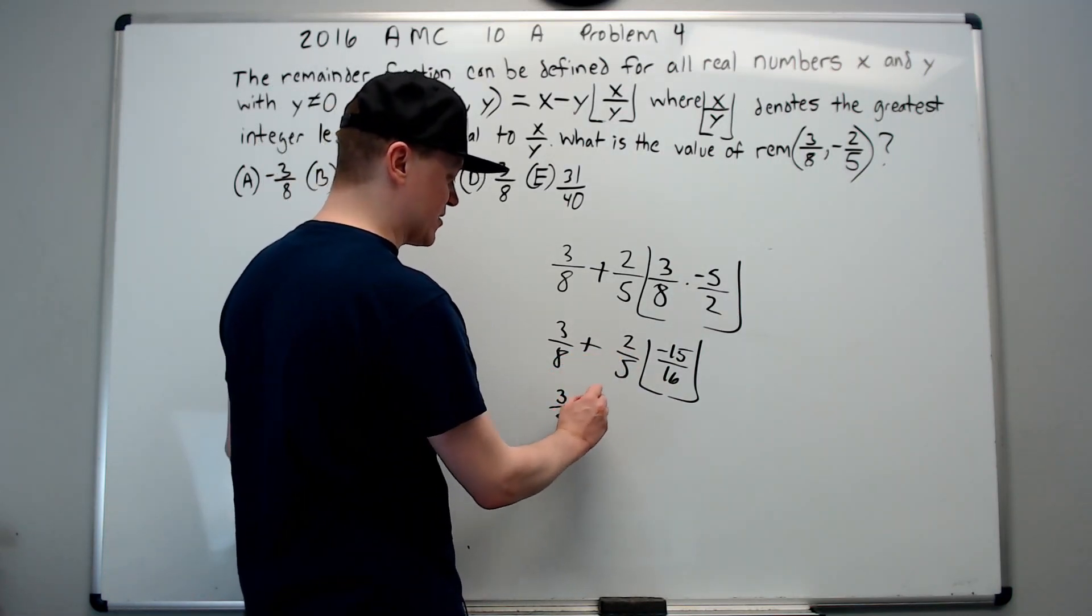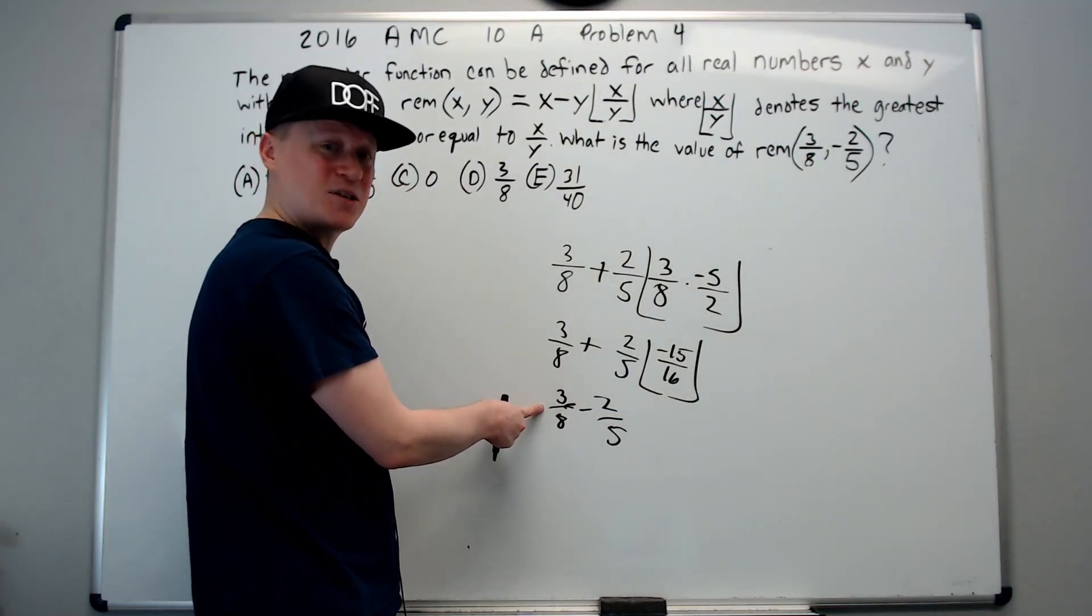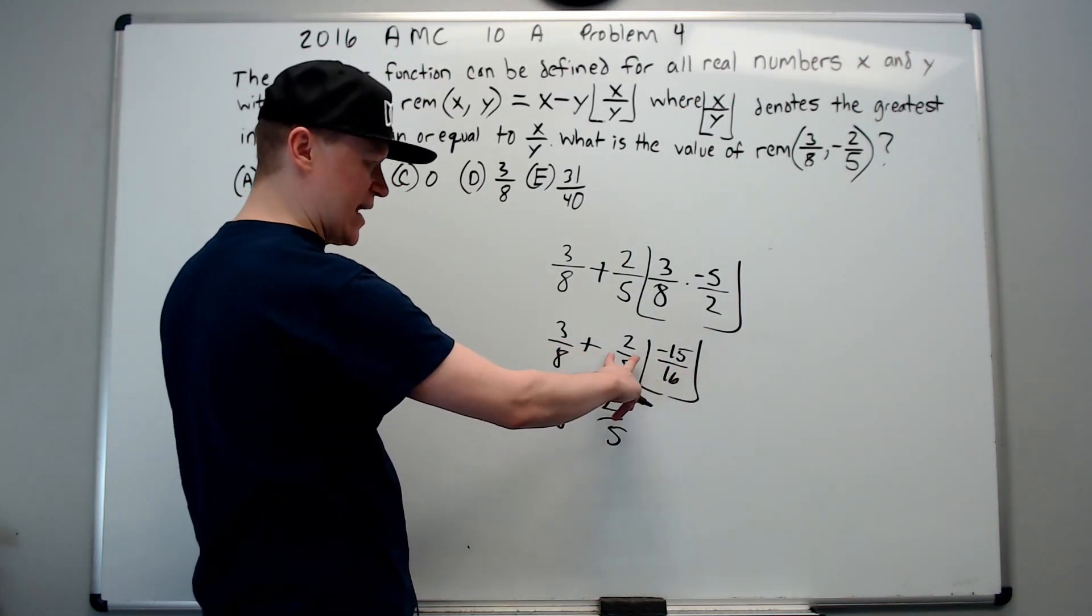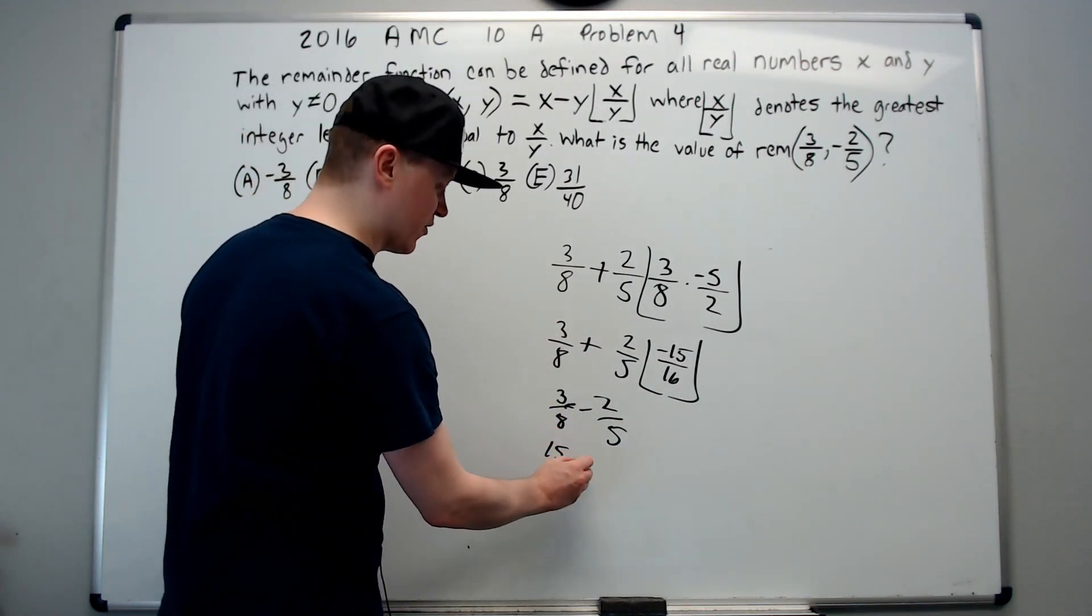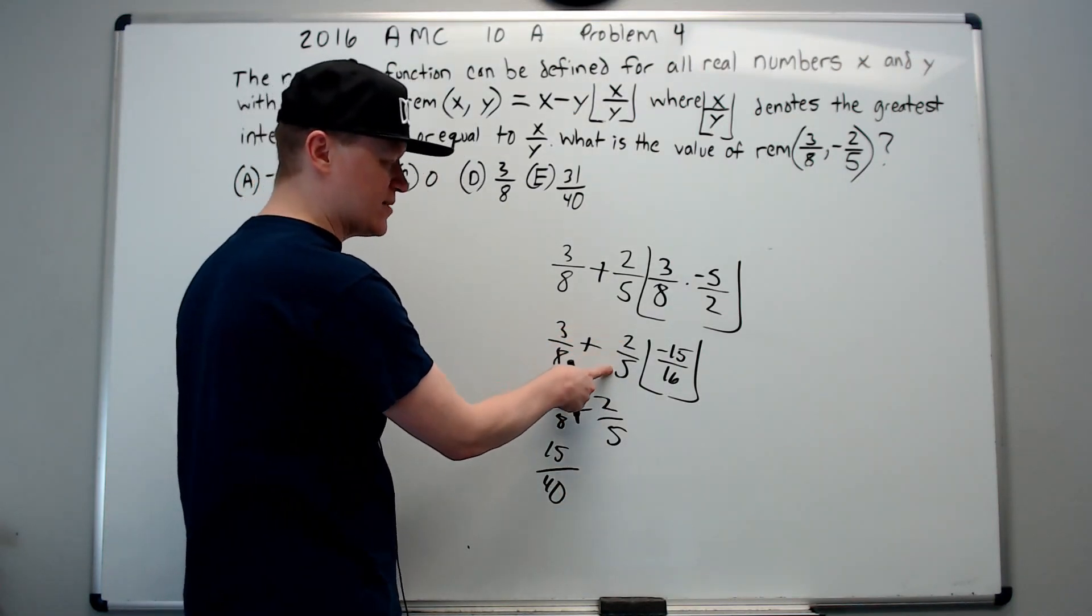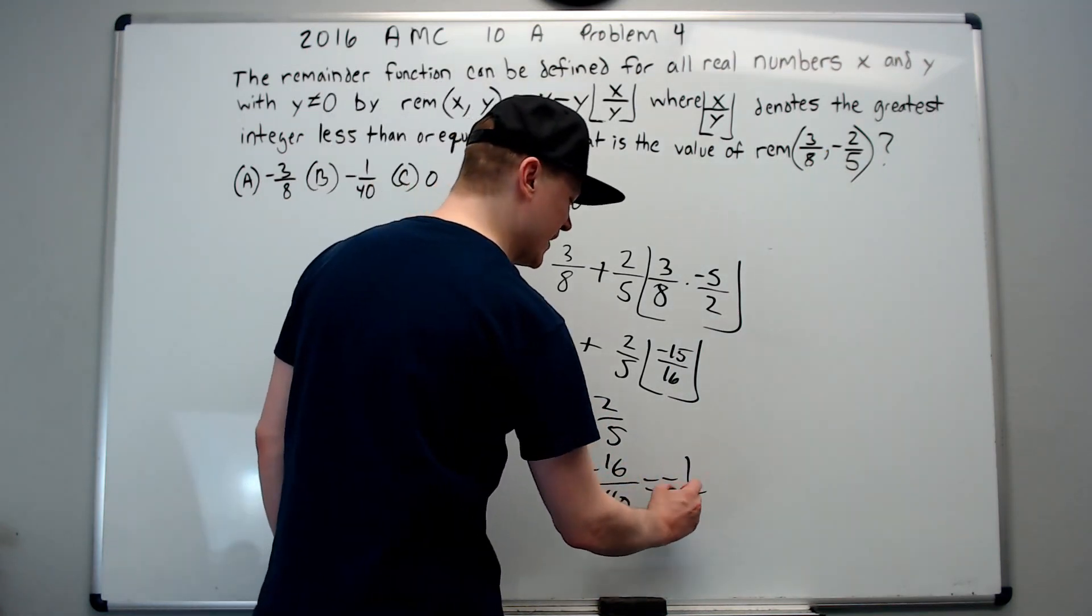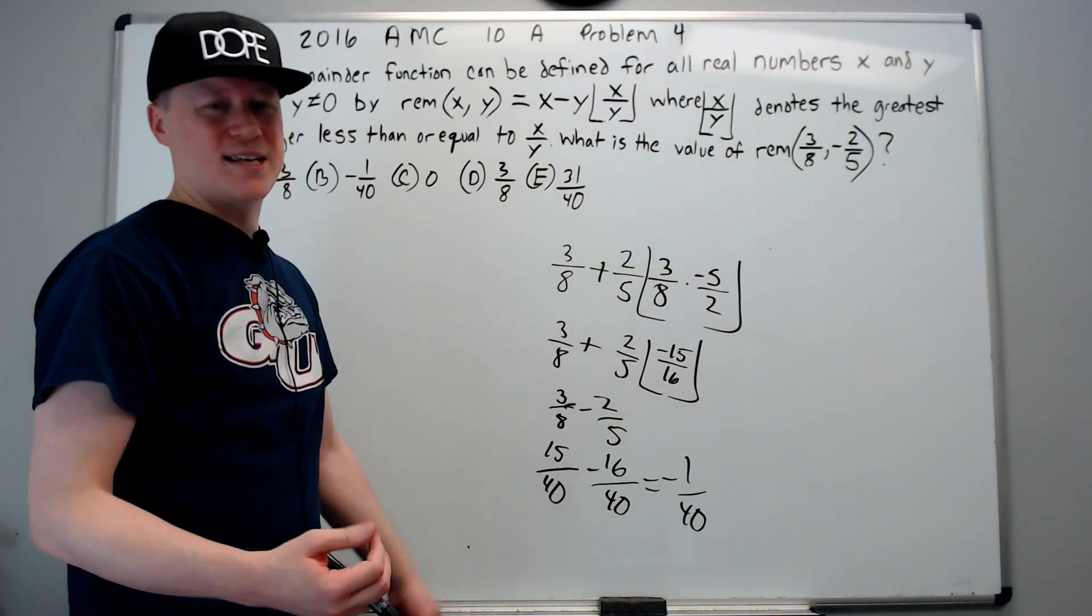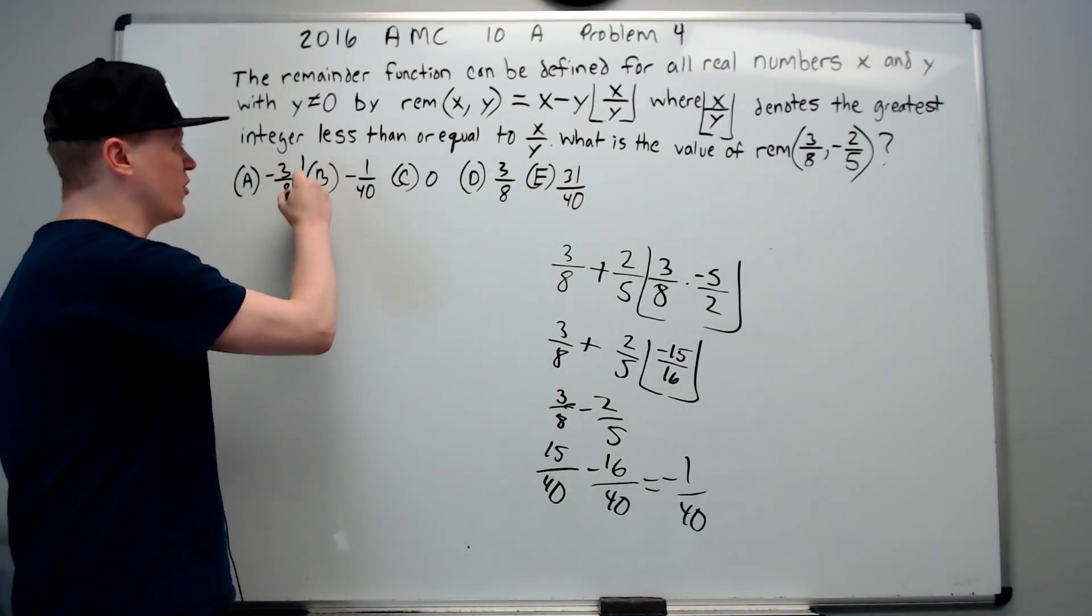I have 3 eighths minus 2 fifths. In reality, on my paper, I'm probably not writing this. I'm just writing it to show you my thought. But you should probably see that this becomes negative, realize we need common denominators, and just multiply in the next step. 15 over 40, to make common denominator with 8 and 5, times 5 over 5, and times 8 over 8, will be minus 16 over 40. It's kind of weird. It does give a negative remainder. But, we don't really care for the sake of the problem. B, negative 1 over 40. That's the answer.